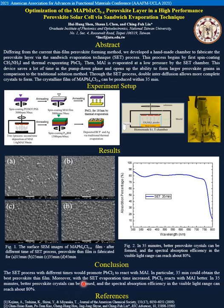Moreover, as the SET evaporation time increases, lead chloride reacts with MAI better. At 35 minutes, the best perovskite crystals can be formed and the spectral absorption efficiency can reach up to 80%.